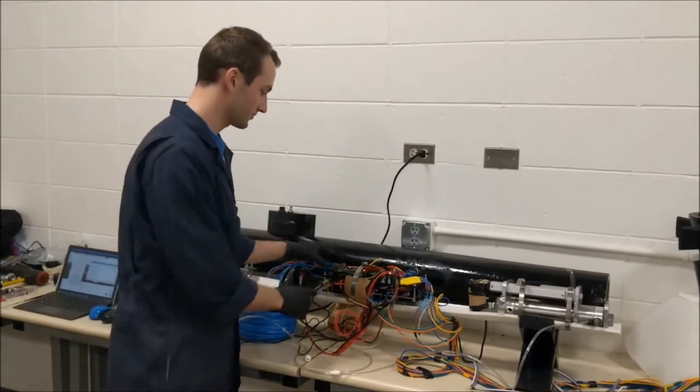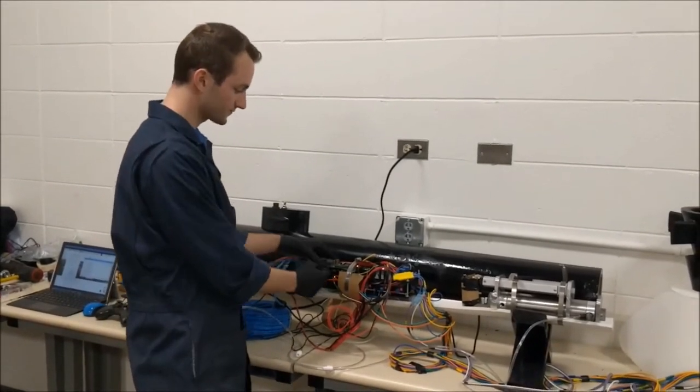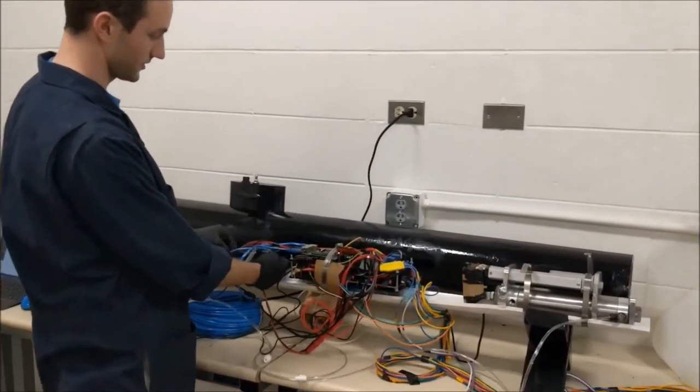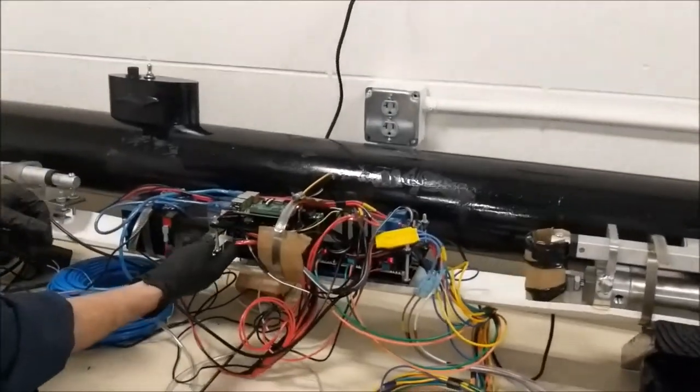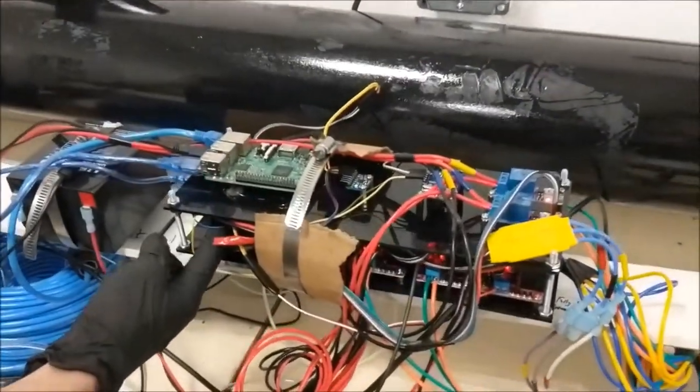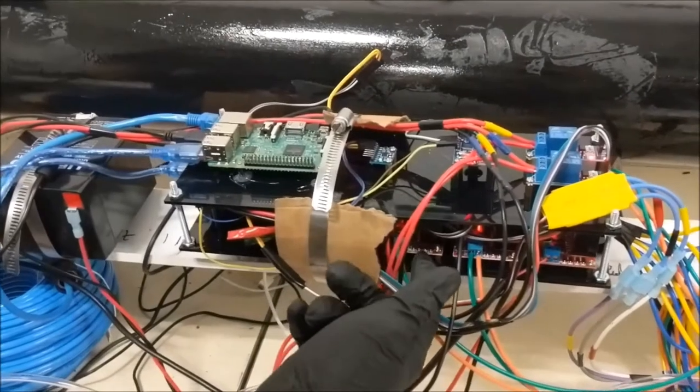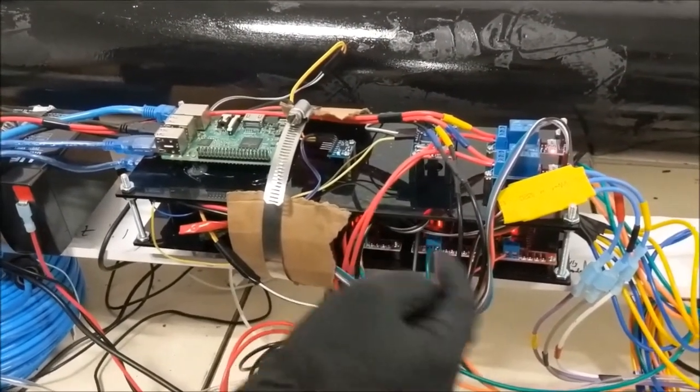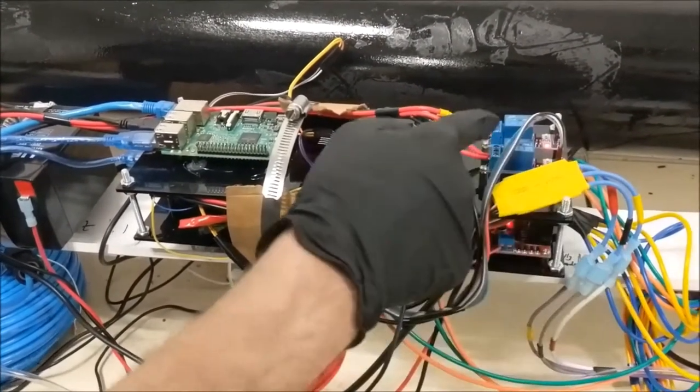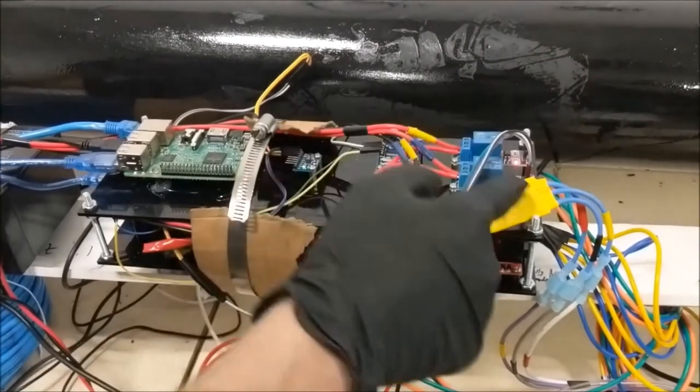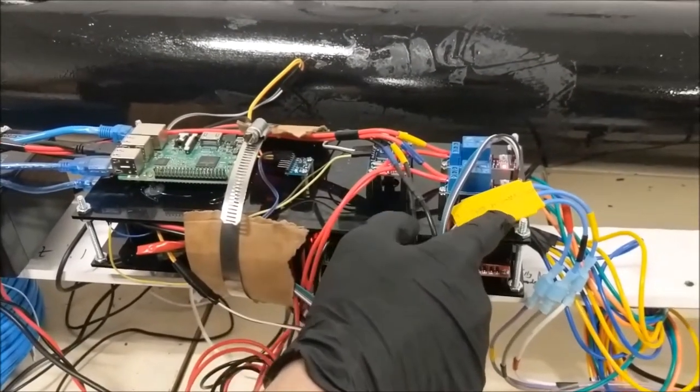On the electronics bay we have the Raspberry Pi which is directly connected with the serial port to the Arduino Mega which is underneath here. And then connected to that is all the motor drivers for the steppers, the relays for the lights, the ESC for the brushless motor for the propeller.